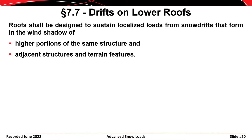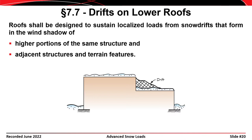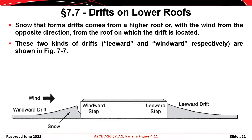The next topic is section 7.7: drifts that form on lower roofs. Roofs shall be designed to sustain localized loads from snow drifts that form in the wind shadow or aerodynamic shade of higher portions of the same structure, adjacent structures, or terrain features. Here is a single structure with a stepped roof feature — the roof is higher on the left than on the right — and you can get a snow drift that forms next to that step. The balanced snow load is shown with dots, and then there is the surcharge or additional load present because of the drift.